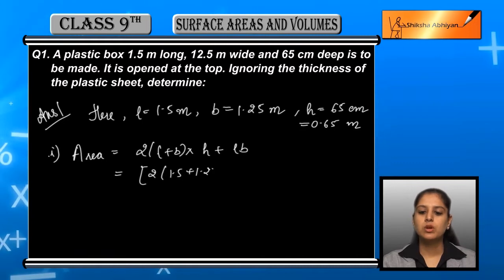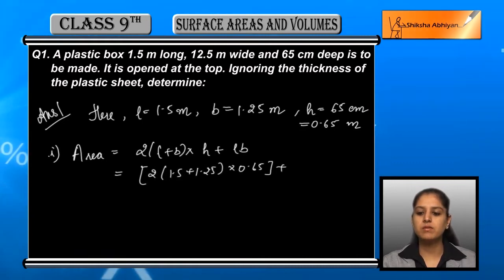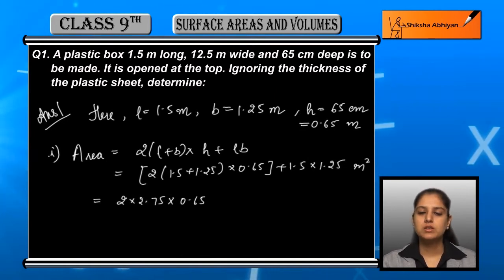It equals 2 × (1.5 + 1.25) × 0.65 plus length into breadth, that is 1.5 × 1.25 meter square. Further, we get 2 × 2.75 × 0.65 plus 1.5 × 1.25.